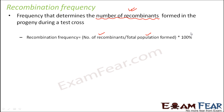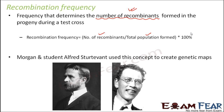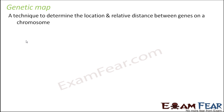This recombination percentage helps us locate genes on a chromosome. Morgan and his student Alfred Sturtevant used this concept to create genetic maps. To locate two genes, they performed a test cross. Once they performed a test cross, they got a recombination frequency — it is easy to find out the offspring population and then calculate recombination frequency. That recombination frequency is then utilized to locate the genes on chromosomes. A genetic map is a technique to determine the location and relative distance between genes on a chromosome.